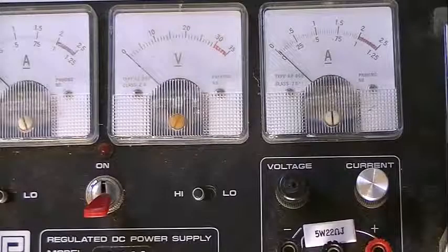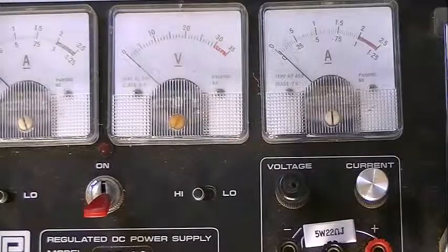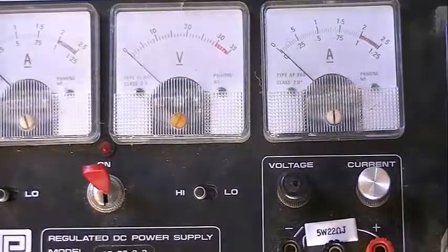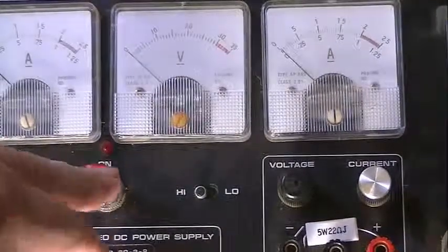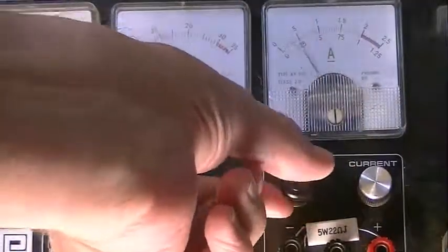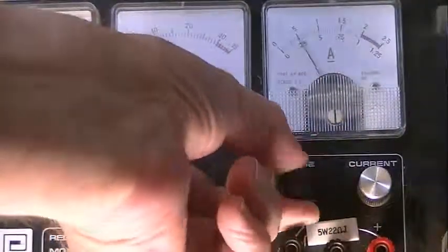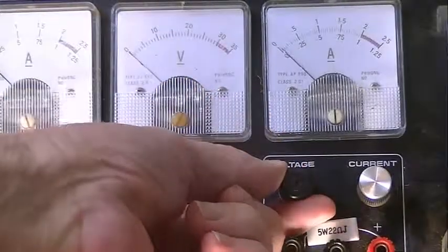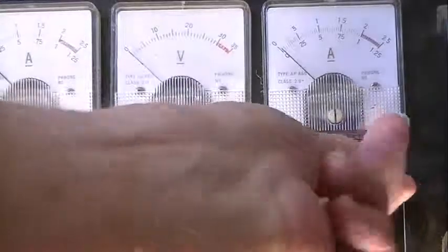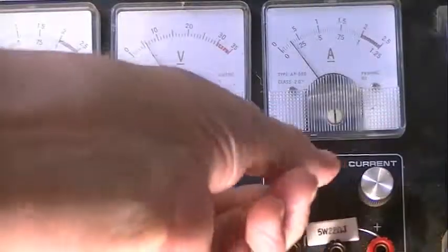What we have here is a standard power supply. There's a main switch, a voltmeter, an ammeter, two controls where I can vary the voltage and I can vary the current. It's what's called a dual regulated power supply.